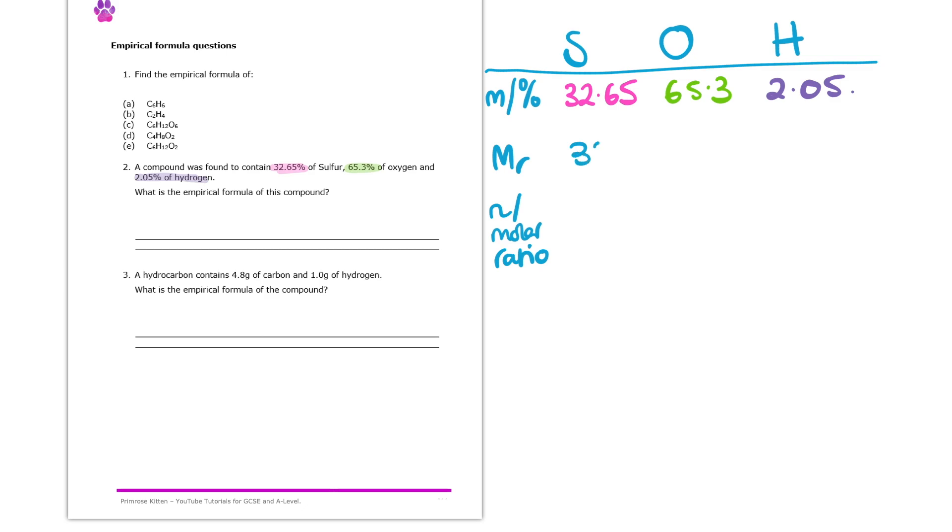So I would fill those all in in the mass or percentage by mass row. Next up, I would go to the periodic table and get all of the MRs of these. So I know sulphur is 32.1, oxygen is 16, and hydrogen is 1. And then I would remember, well, mass over MR gives me the moles. So I will divide each of those to get the moles or molar ratio of each of these. So I've got 1.017 of sulphur, 4.08 for oxygen, and then for hydrogen I get 2.05.